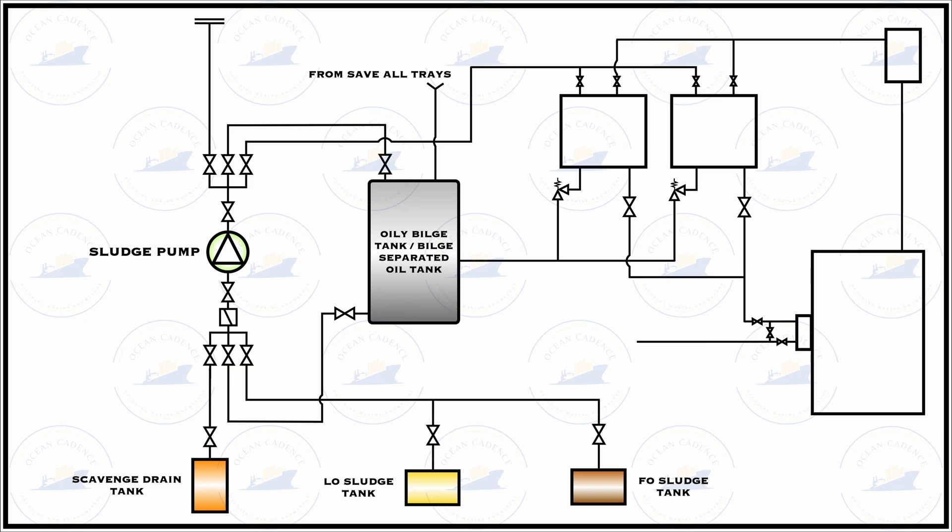The same lines apply for different fuel oil elements — for example, draining your settling tank, service tank, and other tanks. Once the sludge pump takes suction from these elements, to transfer fuel oil sludge content from the fuel oil sludge tank, you line up the discharge valve and the suction valve on the sludge pump side.